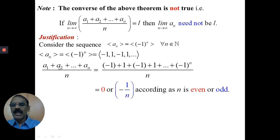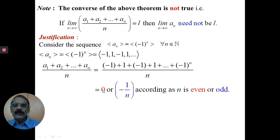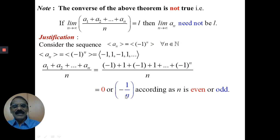Consider two terms: (a1 + a2)/2, that is, (-1 + 1)/2 = 0/2 = 0. Consider first four terms: (-1 + 1 - 1 + 1)/4. The pairs cancel, giving 0/4 = 0. Therefore, the sum is 0 when n is even.